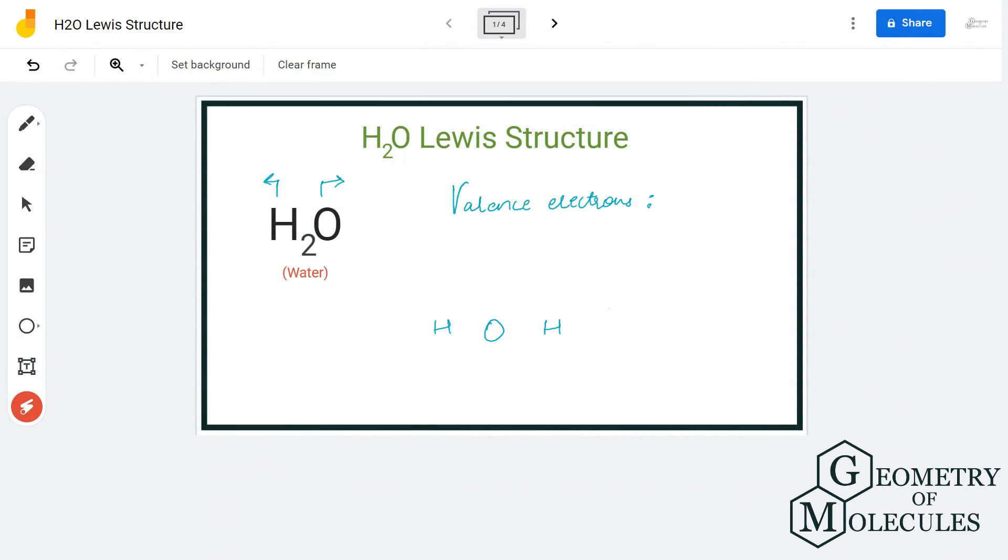Hi guys, today in this video we are going to look at the Lewis structure for H2O molecule. It's a chemical formula for water and is made up of one oxygen atom and two hydrogen atoms. To determine its Lewis structure, we will first go through its total number of valence electrons.